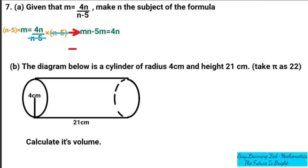Now we are going to put like terms together. As you can see, 4n and mn are like terms. So we rearrange to get negative 5m is equal to 4n minus mn.